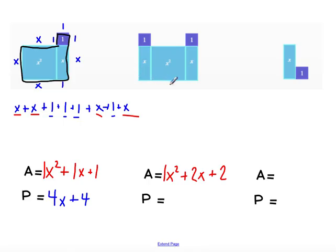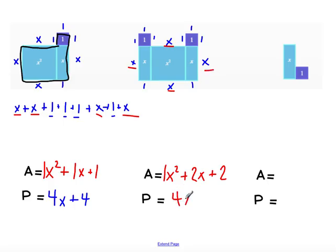Then we start labeling our sides around the outside: 1, 1, 1, then x, 1, x, 1, x, 1, 1, 1, and don't forget that x there. Counting the x's: I have 4 x's. And I have 1, 2, 3, 4, 5, 6, 7, 8 units. So our perimeter is 4x plus 8.